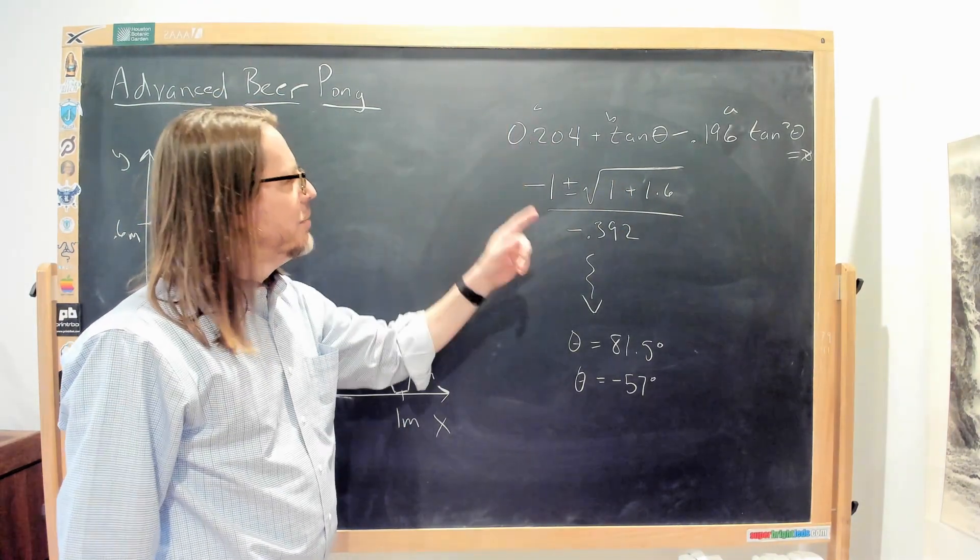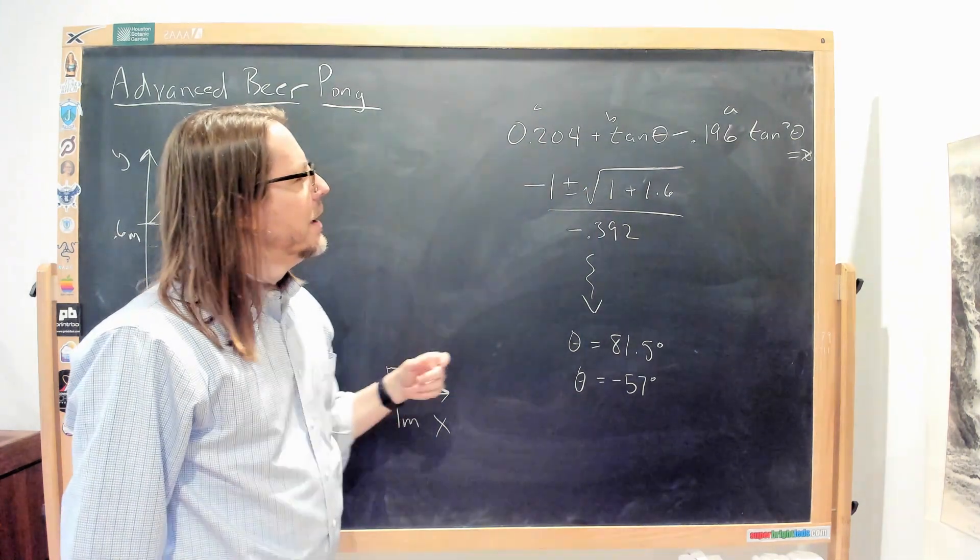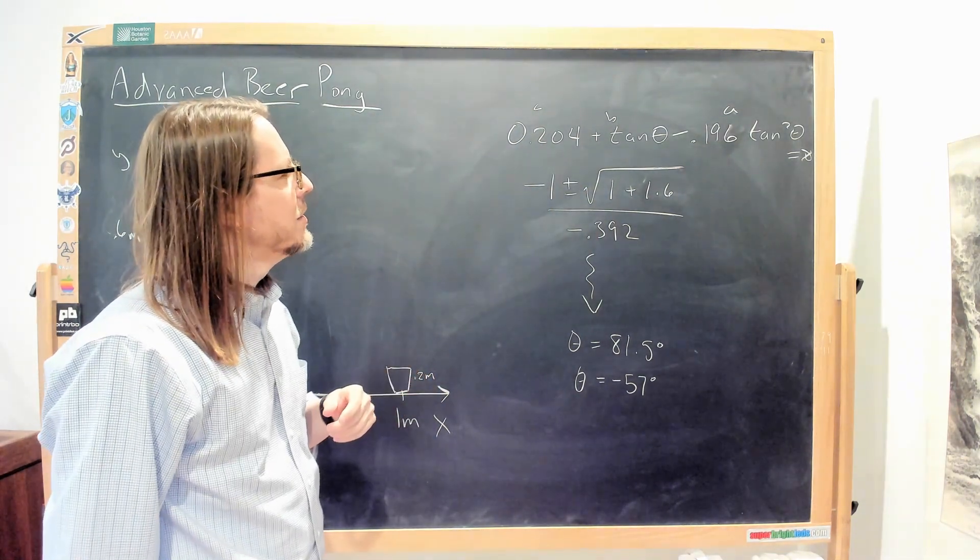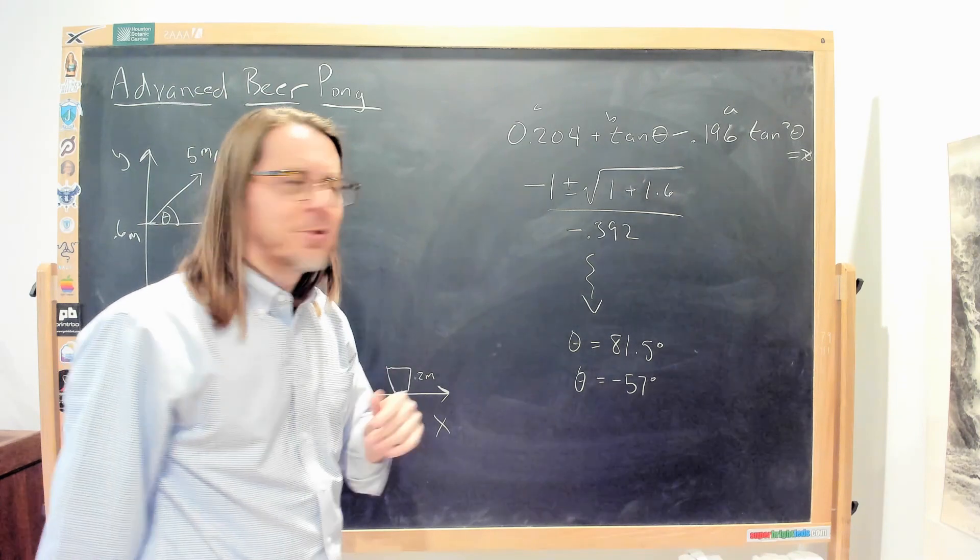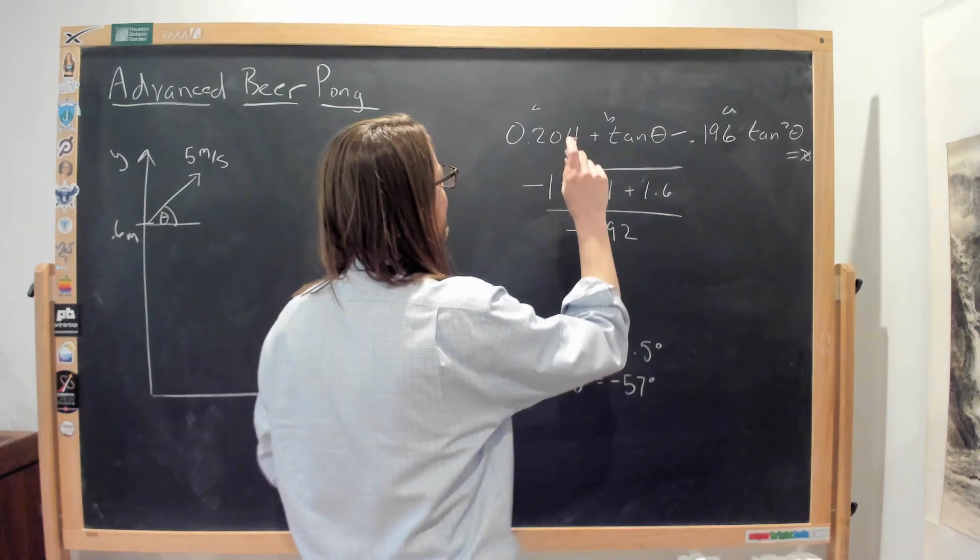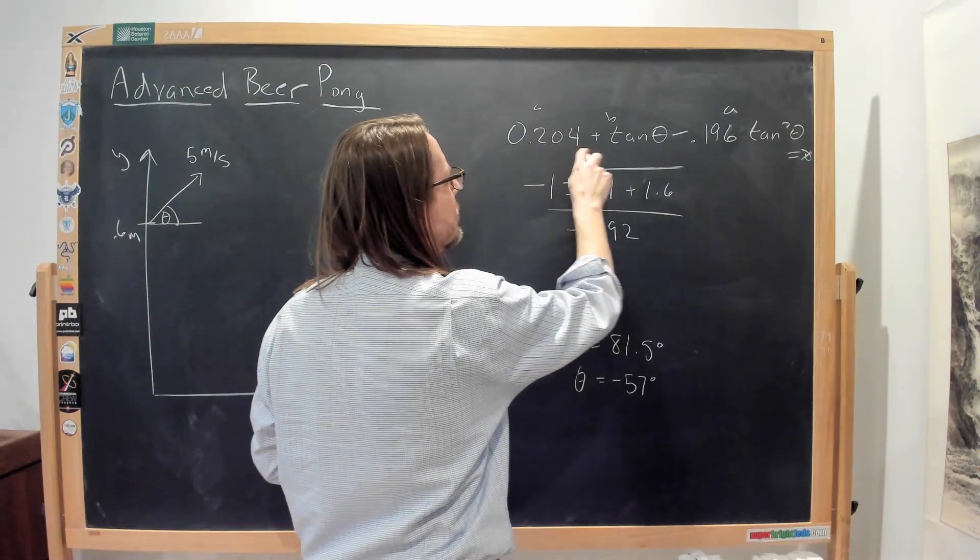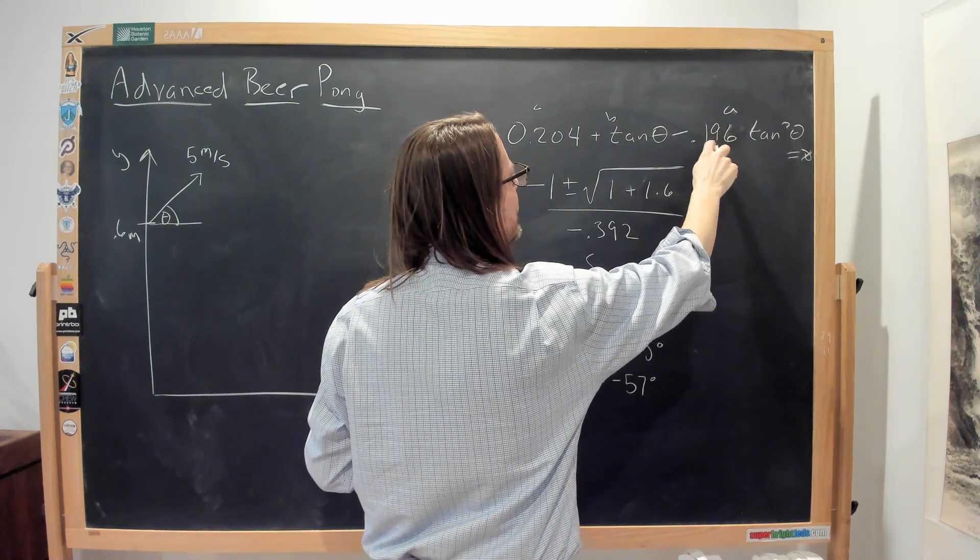Let's see. Negative B, negative 1, plus or minus the square root of B squared. There's 1 squared, plus 2 AC, or minus 2, I'm sorry, minus 4 AC. So let's see. Minus 4 times 0.204 times negative 0.196.